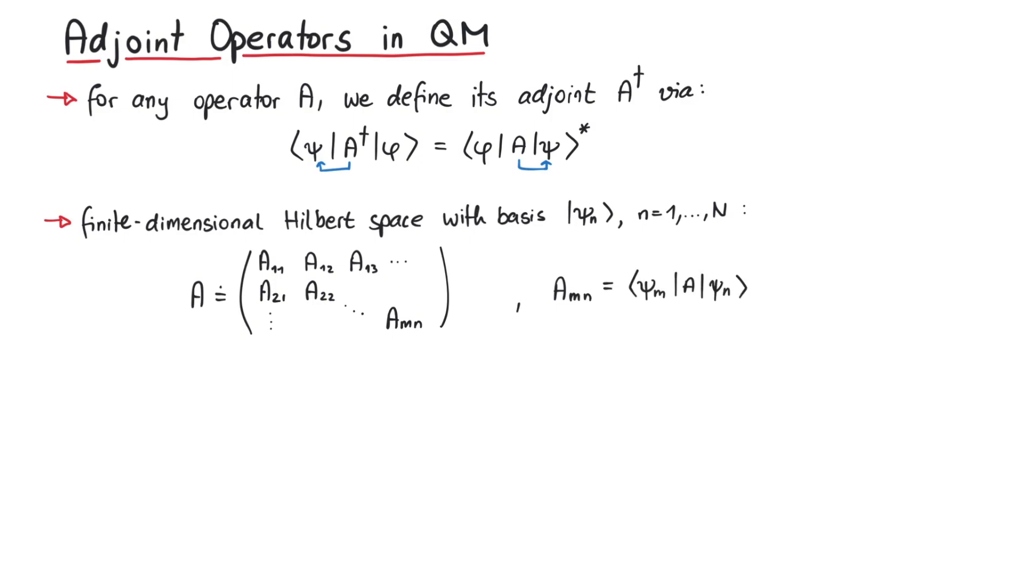Let us now investigate the matrix elements of the adjoint of A. The m,n matrix element of A dagger can be written as psi m, A dagger, psi n. By using the definition of adjoint operators, we write this as psi n, A, psi m, complex conjugated.